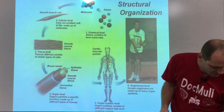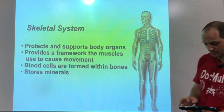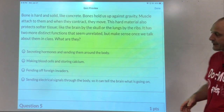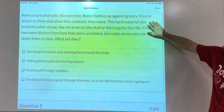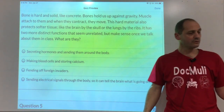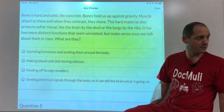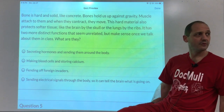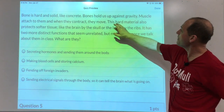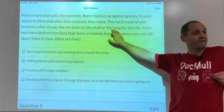Bone is hard and solid like concrete. It holds us up against gravity. Muscles attach to bones, and when they contract, they move us around. You've got upper and lower leg muscles crossing the knee joint — if they contract, it bends; if they contract, it straightens. This hard material also protects softer tissue: the brain has a skull around it, the lungs have ribs around them.